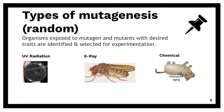For random mutagenesis, we can use a variety of different mutagens. Organisms are exposed to mutagens, and then the mutants with desired traits are identified and selected for experimentation.